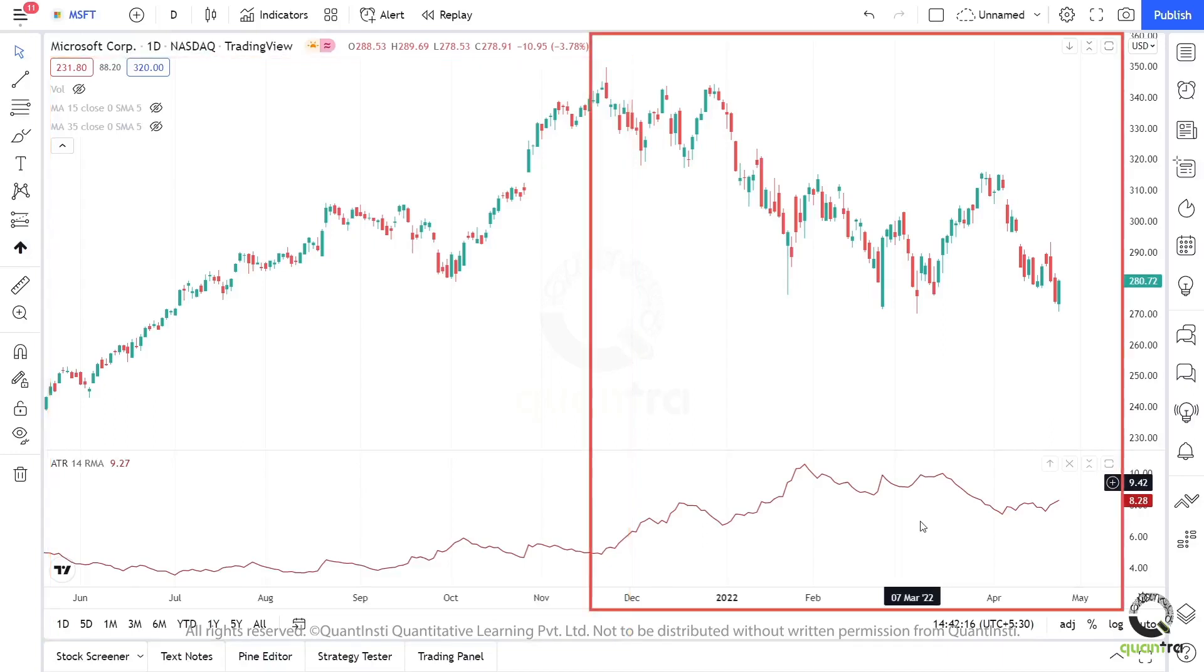On the other hand, rising ATR values, as marked in this zone, signify that the volatility in the prices is increasing. This simply means that the prices can fluctuate sharply in the near term.